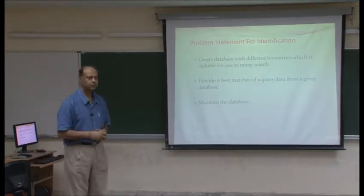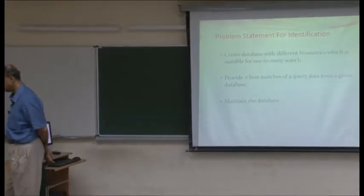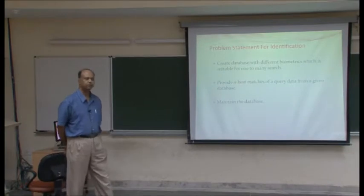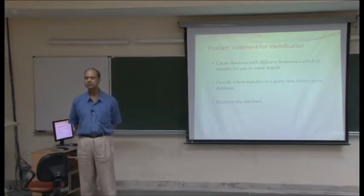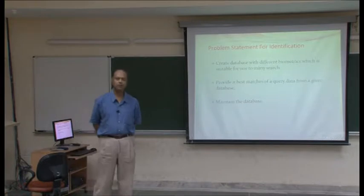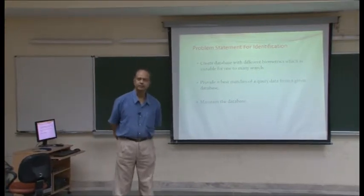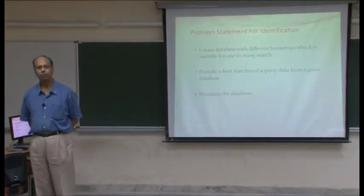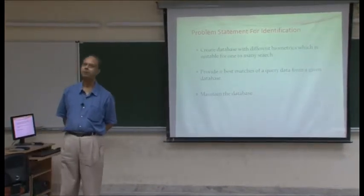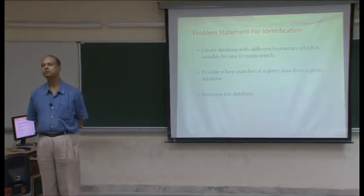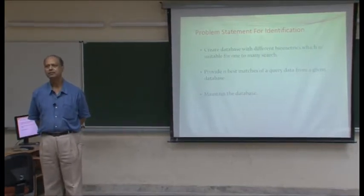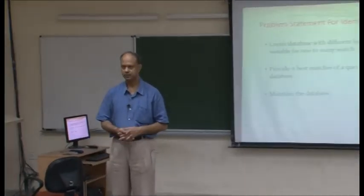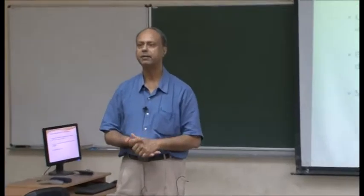For fingerprints, I keep the minutiae points. Generally, we expect 30 to 40 minutiae points, and each gives you the coordinates x, y, theta, and the type of minutiae point. That means 4 bytes per point, and 4 bytes into 35 gives 140 bytes needed to represent your fingerprint data.